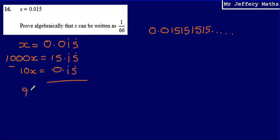What I'm left with is 990x. 1000x minus 10x gives me 990x. And now what I know is that that is equal to just 15 on its own. Now, this 0.15 recurring has been cancelled out by subtracting it from 15.15 recurring.